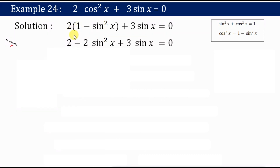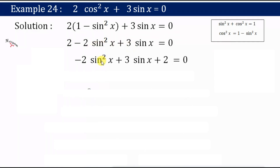When I multiply by 2, I get 2 - 2sin²x + 3sinx = 0. Now this looks like a quadratic equation. Let me rearrange the terms: -2sin²x + 3sinx + 2 = 0. Yes, it is a quadratic equation.